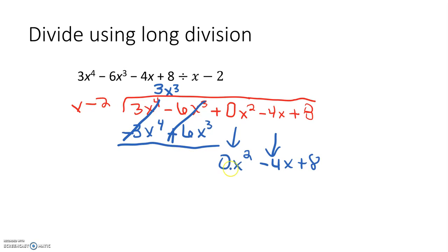So I bring down my negative 4X plus 8. So X times what would give me negative 4X? So that's going to be negative 4. Negative 4 times X is negative 4X. Negative 4 times negative 2 is positive 8. And we draw our line and change both signs. This time, both of them are eliminated and I'm left with a remainder equal to 0.